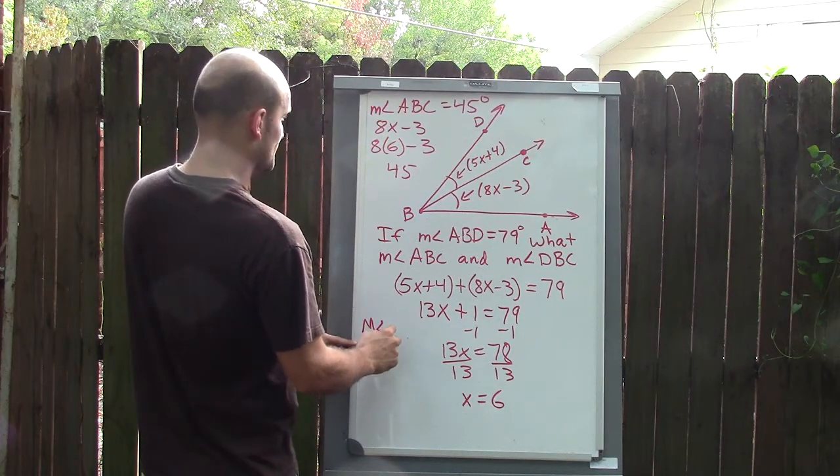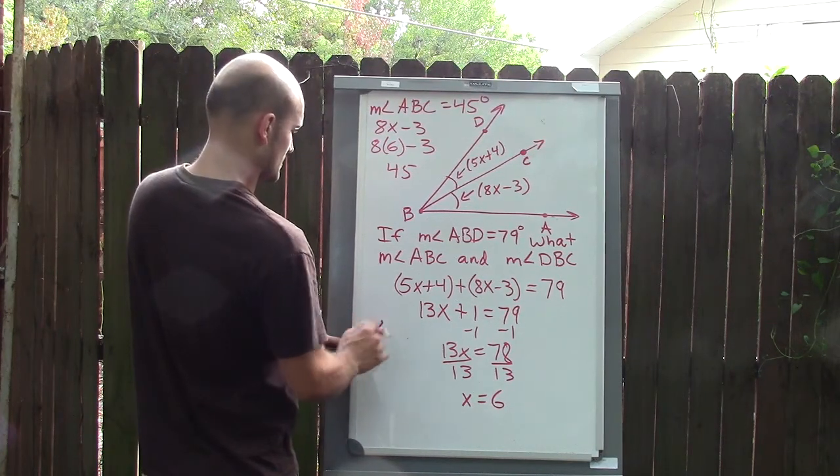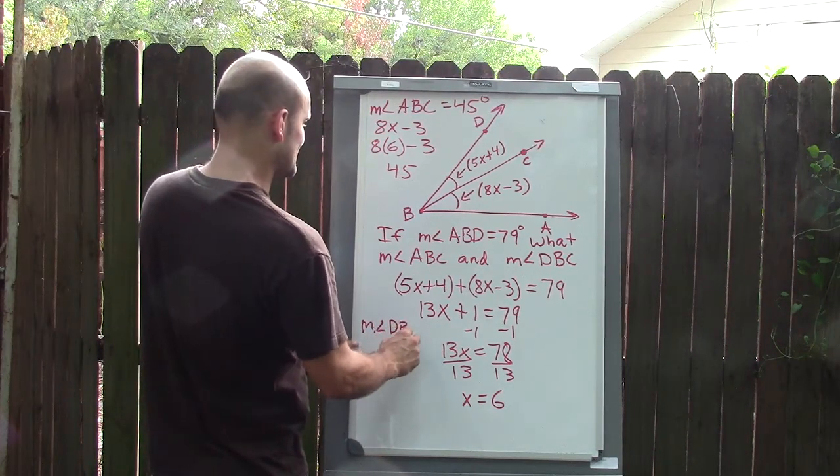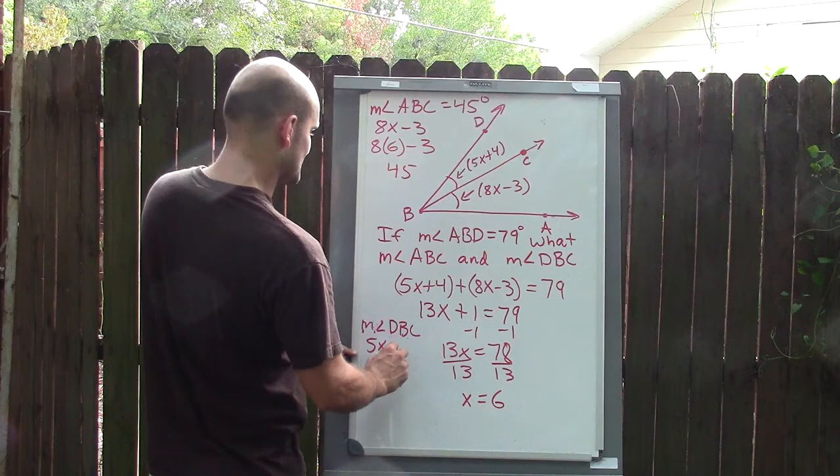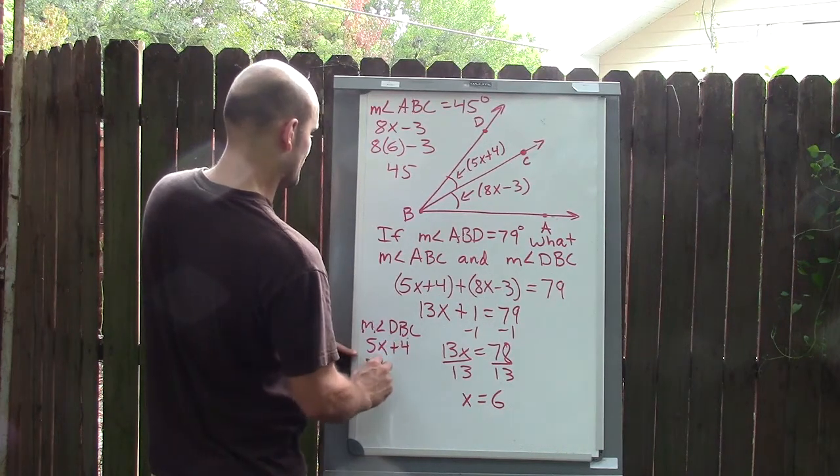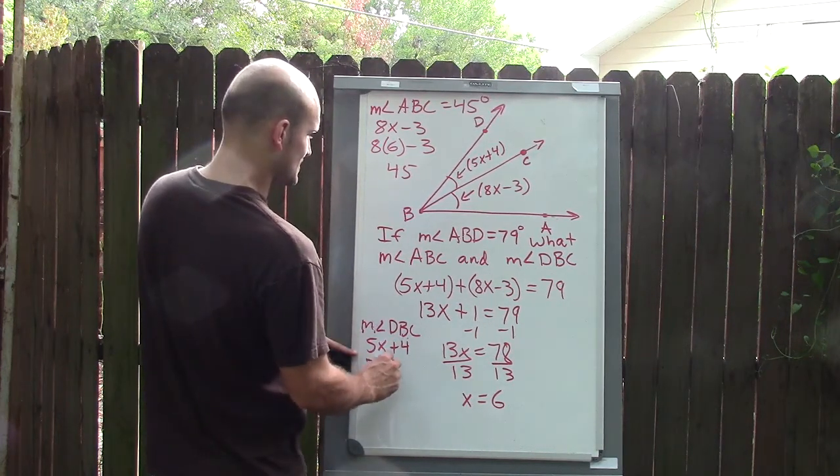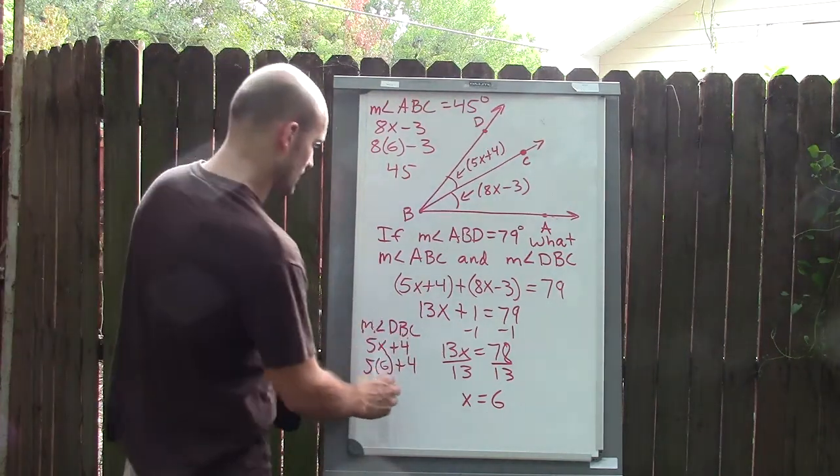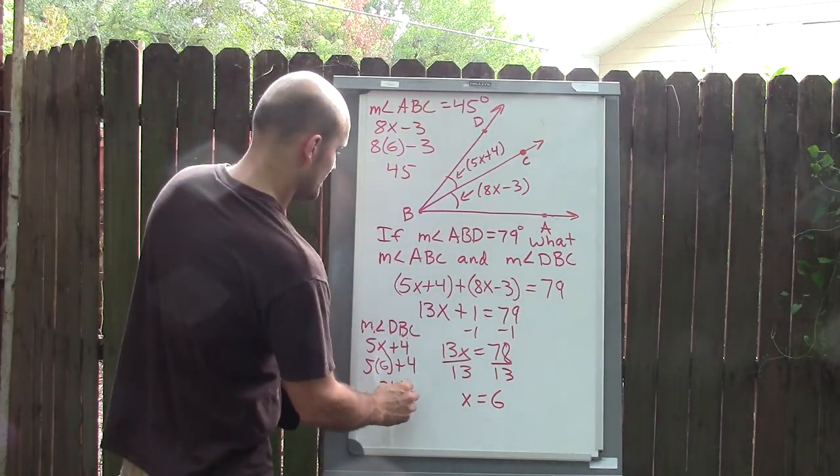And then I'll do the measure of angle DBC, which is 5X plus 4. Well, 5 times 6 plus 4—5 times 6 is 30, plus 4 is 34 degrees.